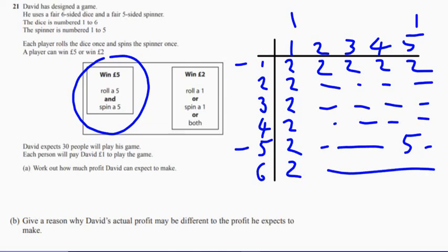So the question is, work out how much profit David can expect to make from thirty people who played a game. And they all pay a pound. So in other words, his income would be thirty pounds.